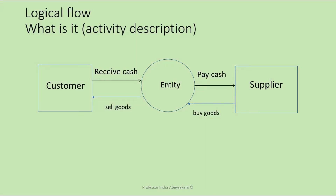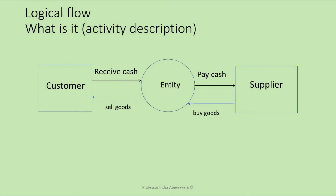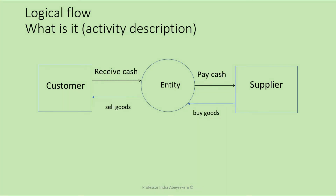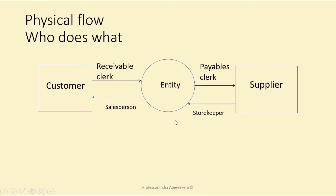The same context level diagram can be looked at as a logical flow and a physical flow. If it is a logical flow, our focus is on what it is — it is about activity description. It is the entity or the information system, with the customer and suppliers as the external entities. Activities are described as receiving cash, selling goods, paying cash, and buying goods.